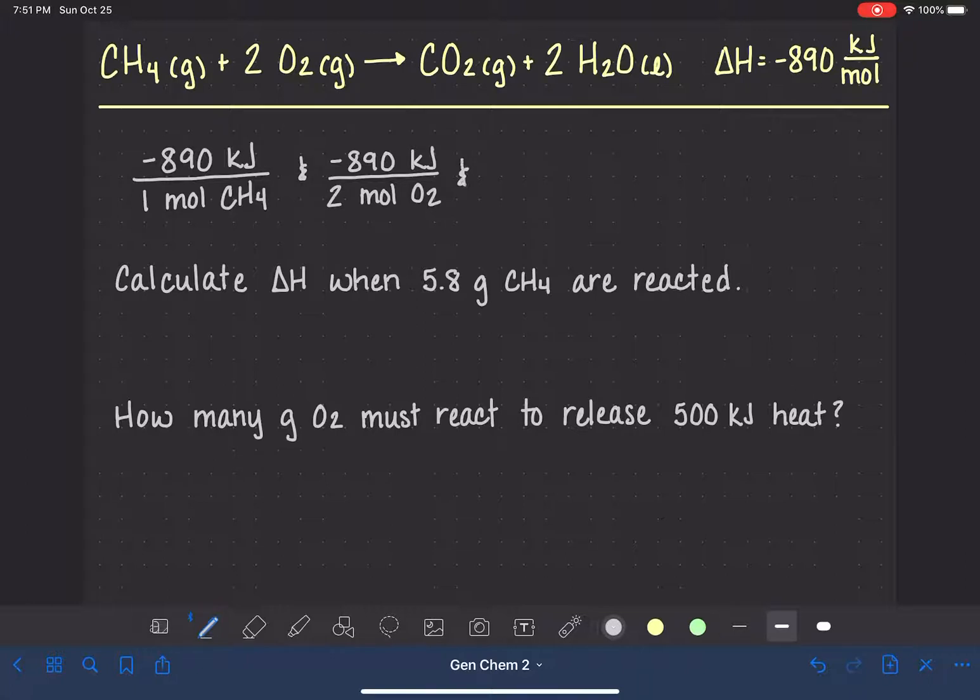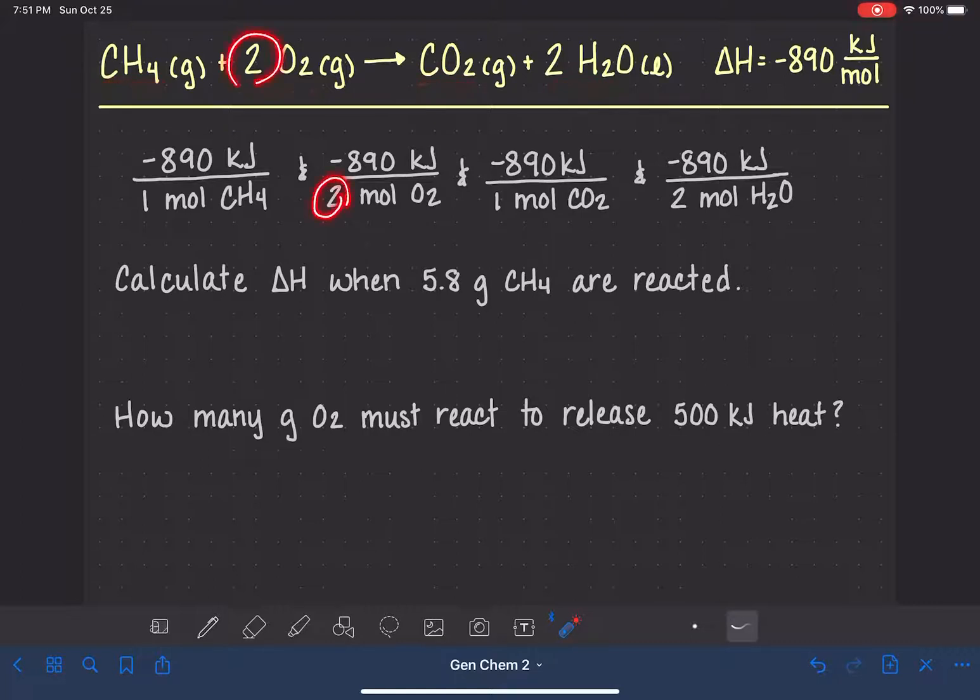We could also say we have negative 890 kilojoules of heat for every one mole of CO2. And last but not least, negative 890 kilojoules for every two moles of H2O. So no matter what the equation is, when you have your balanced equation, you could always express delta H in terms of any reactant or any product, as long as you're maintaining any stoichiometric coefficients that might be present for that reactant or product. So now that we have these, these look like conversion factors. And again, these are conversion factors that allow us to form a relationship between energy and quantity of any reactant or product.